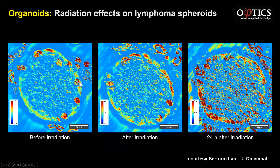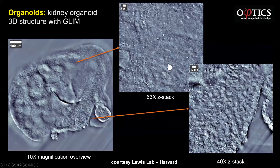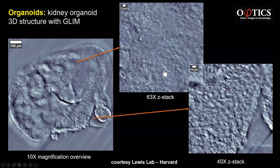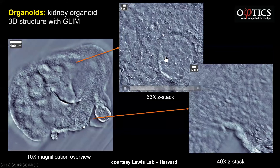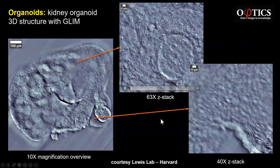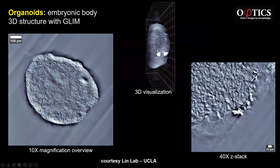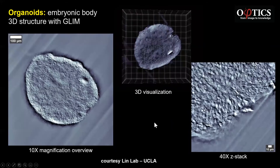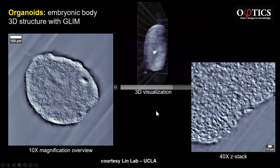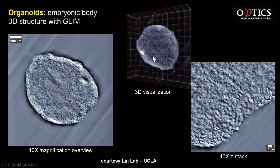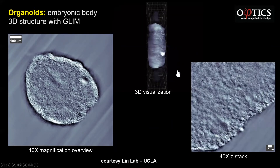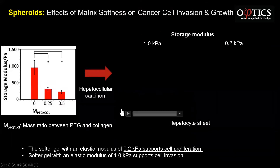This is a kidney organoid from Harvard. They were excited to see these cellular and subcellular structures in this Z-stack — particular structures that are specific to the kidney. This is an embryoid body from UCLA — the idea is to be able to identify single cells and potentially subcellular structures and study their dynamics.